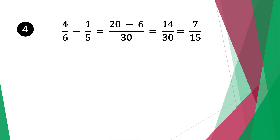Let's move on to question four. We have four-sixths minus one-fifth. We have different denominators, so we multiply six by five to get thirty. Thirty is a common factor for six and five. Thirty divided by six is five, five times four is twenty.